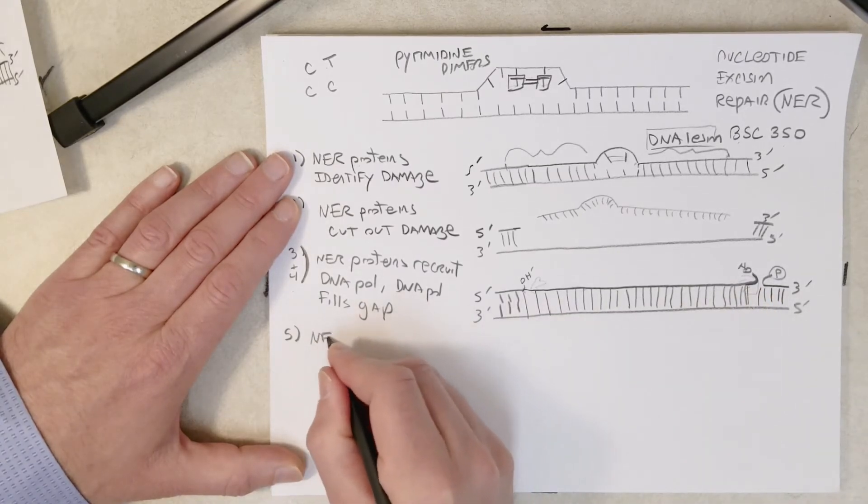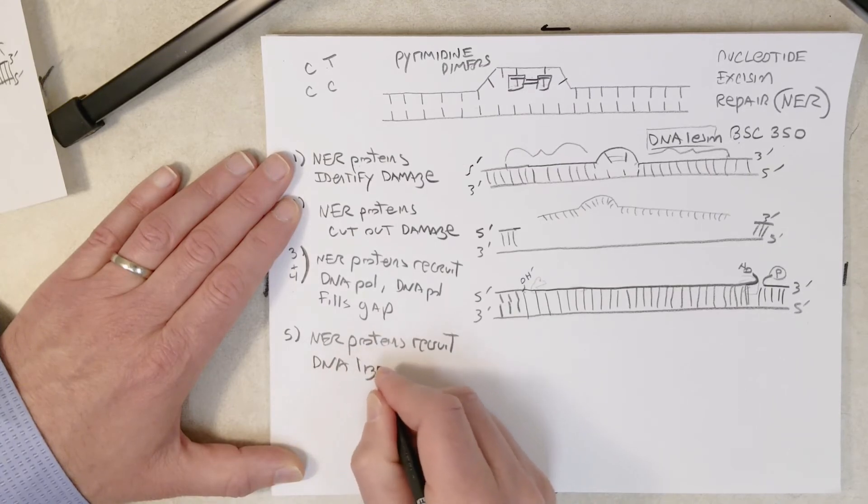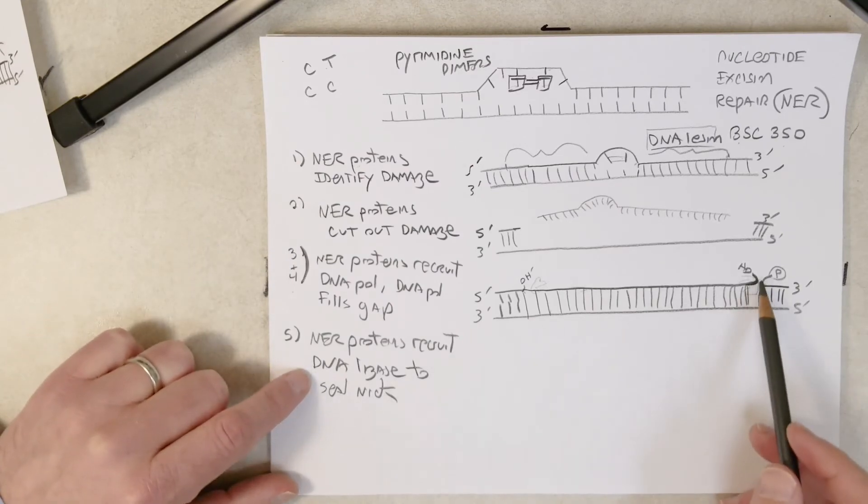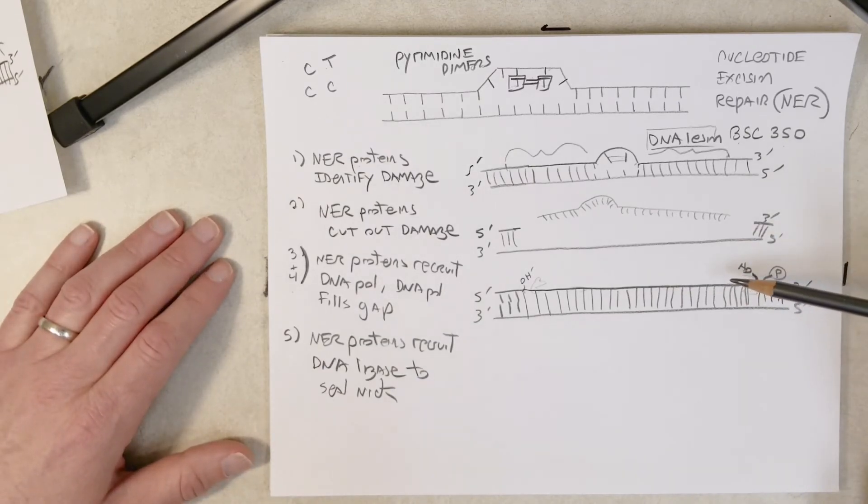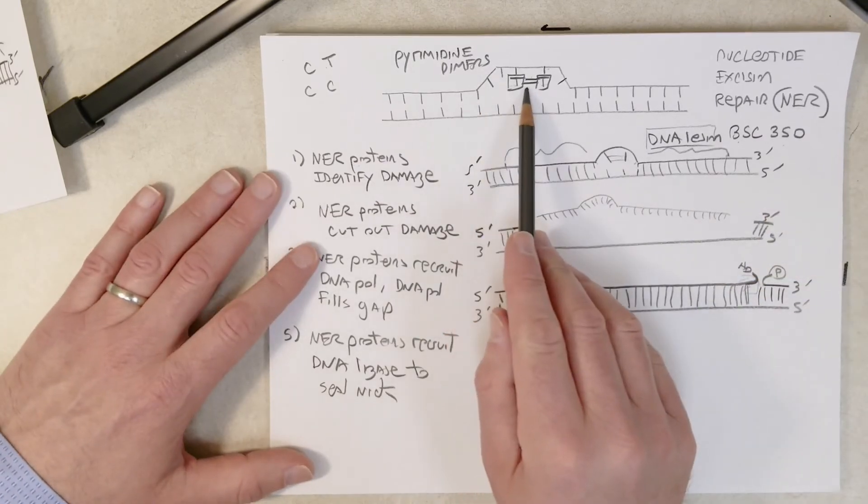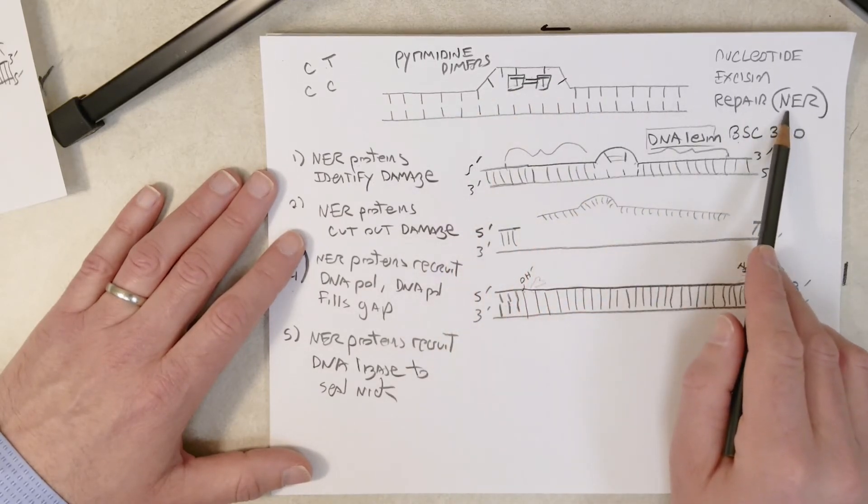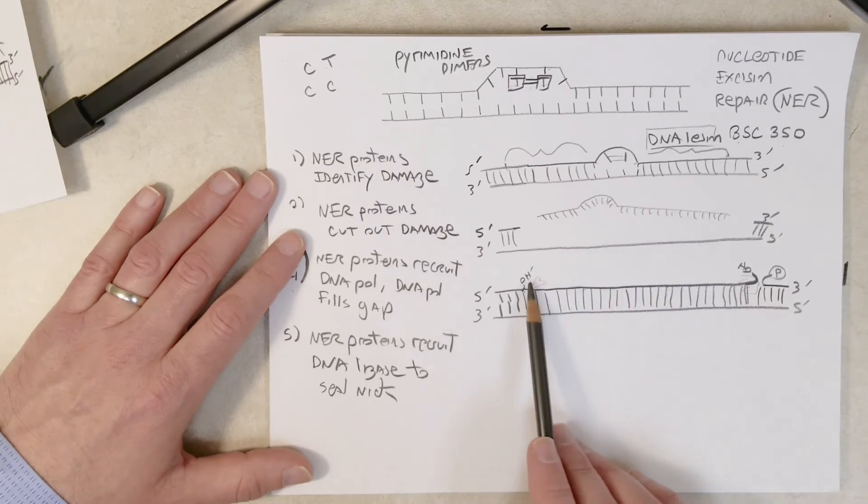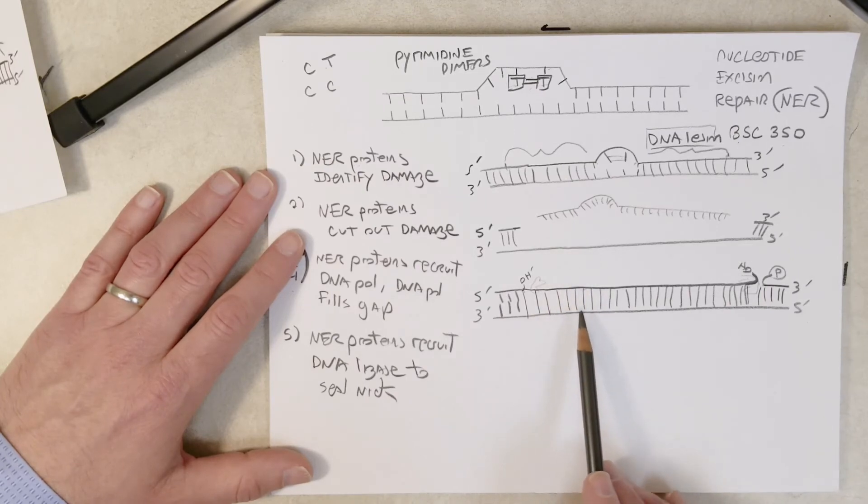So the fifth step, NER proteins recruit DNA ligase to seal the nick. The DNA ligase is going to come in here and it's going to seal this nick right here. And that's how nucleotide excision repair works. So we get lots of pyrimidine dimers in our epidermal cells, and the proteins involved in nucleotide excision repair identify the dimer, cut out the damaged area, and recruit DNA polymerase and ligase to fix or fill the gap, resulting in a repaired DNA molecule.